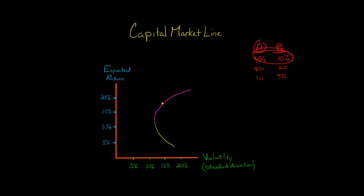Any point here — all these different points are different combinations, different weights of stock A and stock B in this portfolio. At a given weight, let's say 10% in stock A and 90% in stock B, we might say that the portfolio has a volatility of 15% and an expected return of 5%.